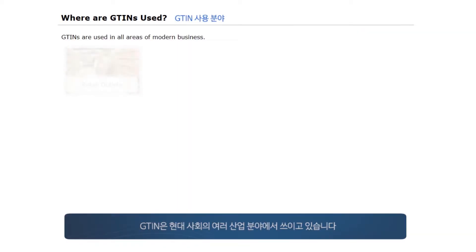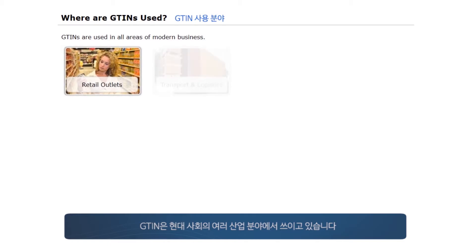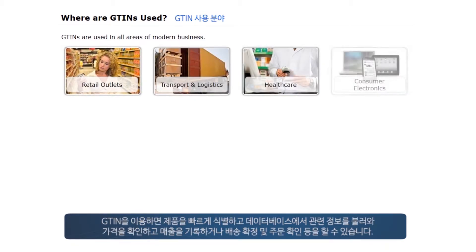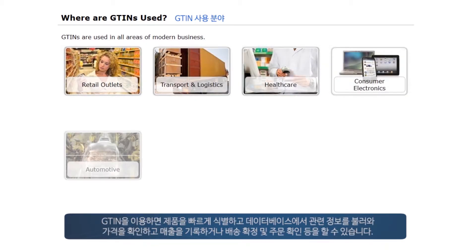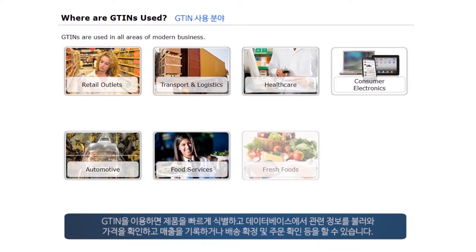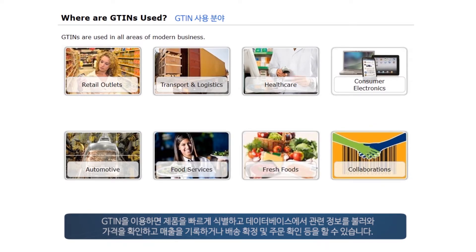GTINs are used in all areas of modern business. They provide a quick way to identify an item which can then be looked up in a database to get a price, record a sale, confirm a delivery, or to identify an order.